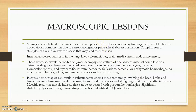Macroscopically, strangles is rarely fatal — if a horse dies in the acute phase of disease, lesions will be very hard to find at necropsy. Internal abscesses can form in the lung, liver, spleen, kidney, brain, mediastinum, and mesentery. Myocarditis will also be present. Purpura hemorrhagica leads to petechial and ecchymotic hemorrhages, and rhabdomyolysis with progressive atrophy will be seen in affected horses.